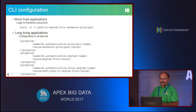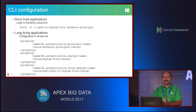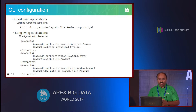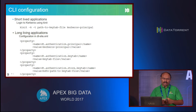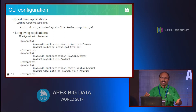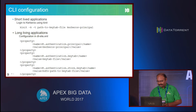This slide shows you how you specify the principal and key tab for the CLI. We can always get to the slides later and look at the actual property names. Now let's look at when the application has been submitted and is starting to run - what are the different interactions that happen within the application and how we secure them.